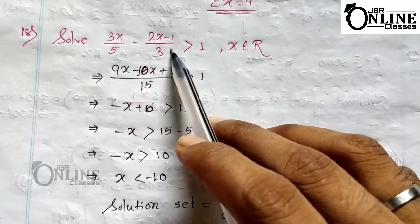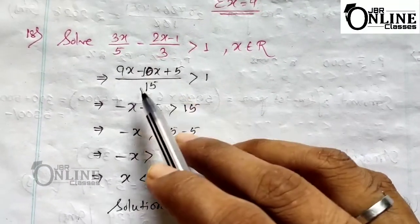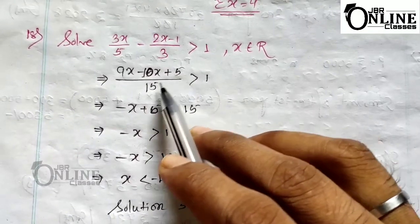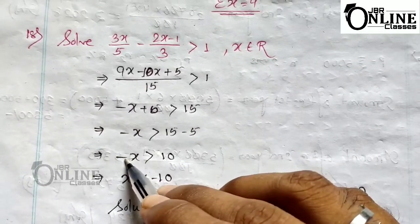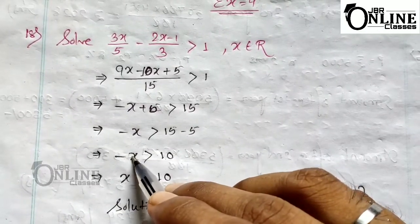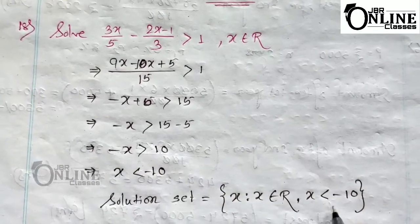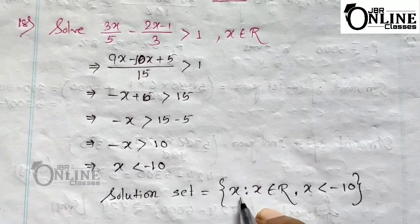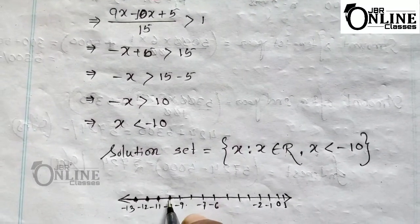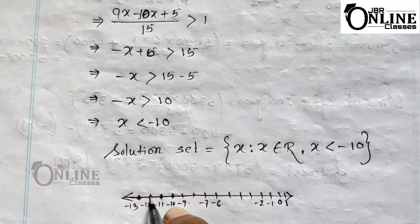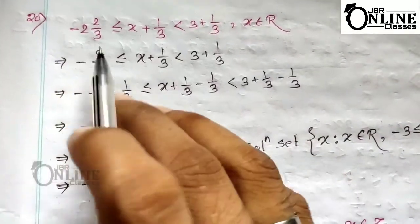That is the given inequation; you have to solve it and represent it on the number line. By LCM you will get (9x − 10x + 5)/15 greater than 1, and from that you will get −x greater than 10. If −x > 10, then multiply minus on both sides and you will get x < −10. The solution set is {x : x ∈ R, x < −10}. On the number line, mark −10, −11, −12, −13, and so on.